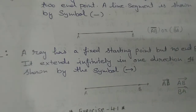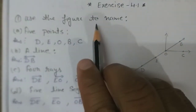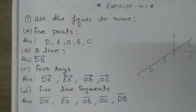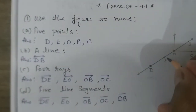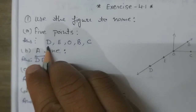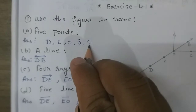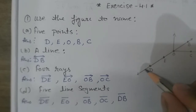We will now discuss Exercise 4.1. Use the figure to name — you are given a figure and some questions to answer. The first question asks for five points. The first, second, third, fourth, and fifth points you can write.